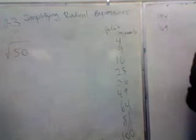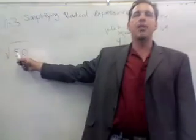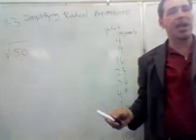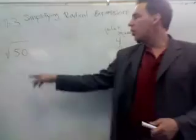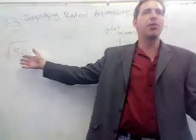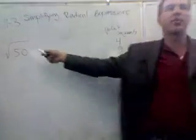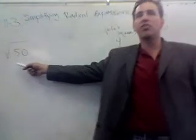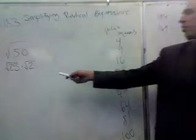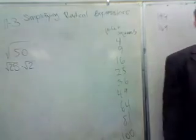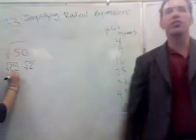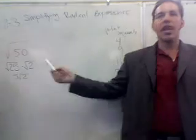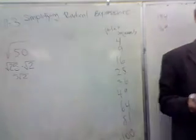Why those are important is because when you break this down, you want to break it into perfect squares if you can. Can you take the square root of 50? Is that a perfect square? So what about the square root of something times something — can this be broken down into one of these times something else? 25. Good. So this is the square root of 25 times the square root of 2. Square root of 25 equals 5. So the answer is 5 root 2, and we're done, because you can't break the square root of 2 down any further.